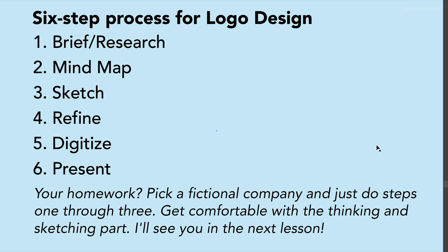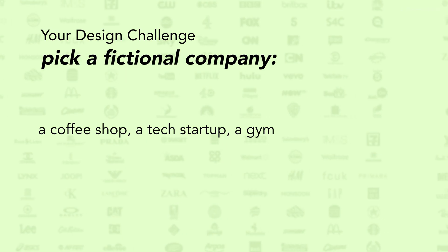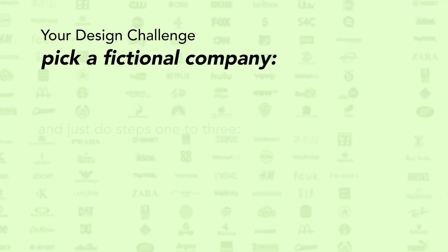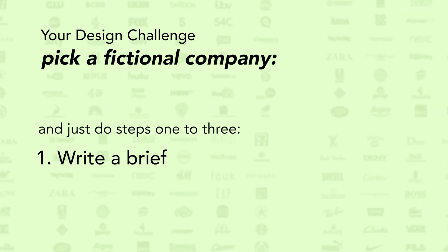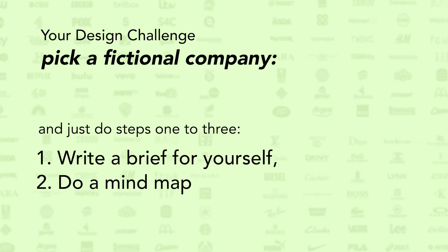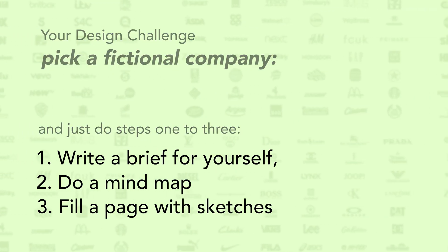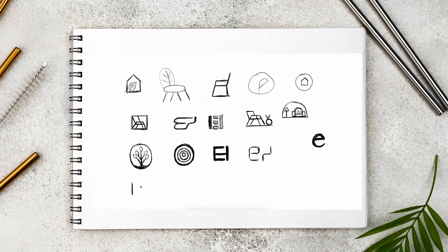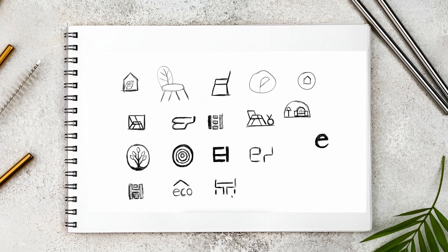For your next step, I want you to pick a fictional company — a coffee shop, a tech startup, or a gym — and complete steps one through three. Write a brief for yourself, do a mind map, and fill a page with sketches. Get comfortable with the thinking part. I'll see you in the next lesson.